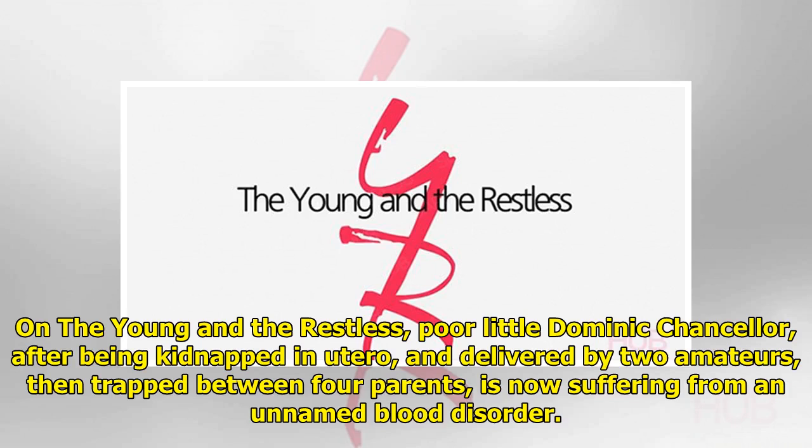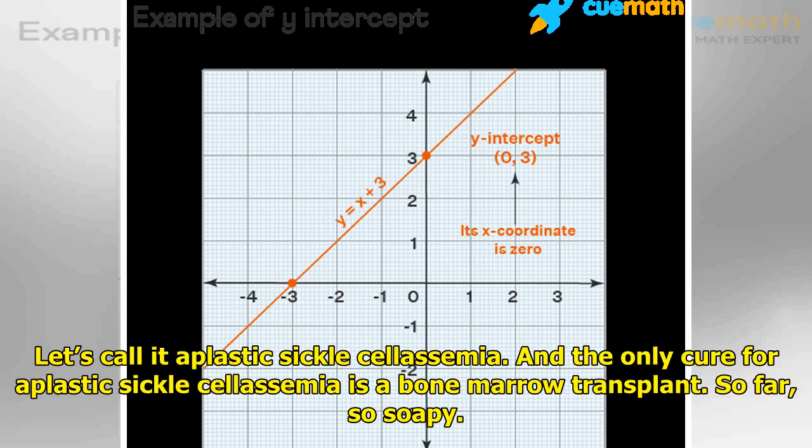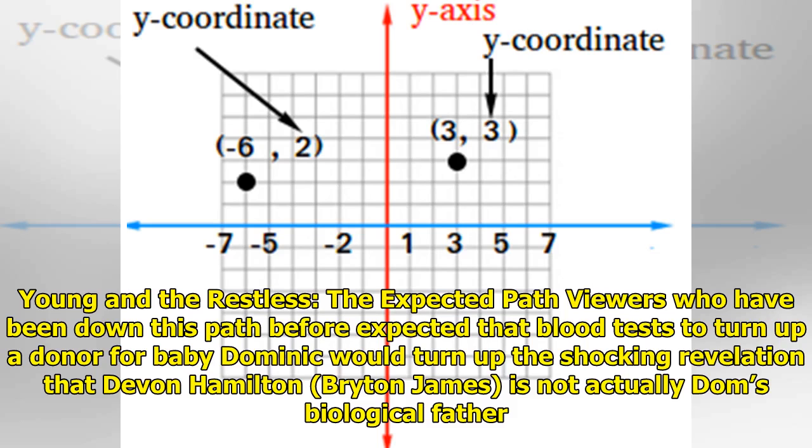On The Young and the Restless, poor little Dominic Chancellor, after being kidnapped in utero and delivered by two amateurs, then trapped between four parents, is now suffering from an unnamed blood disorder. Let's call it aplastic sickle cellosemia. The only cure is a bone marrow transplant. So far, so soapy.